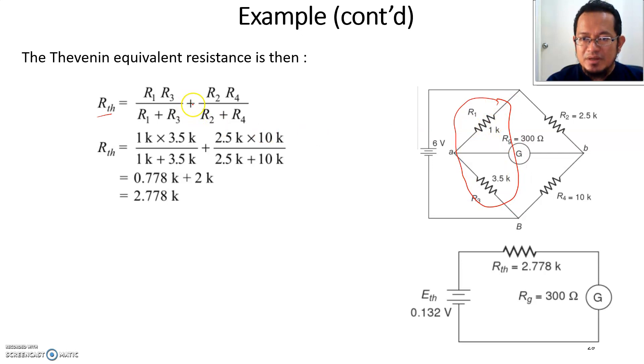Plus R2 multiplied by R4 divided by R2 plus R4, which is the resistance on this part of the branch. You plug in all the numbers and you get the Thevenin resistance of 2.778 ohms.